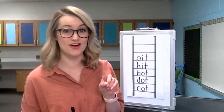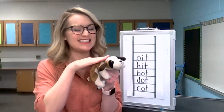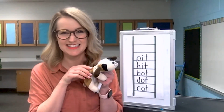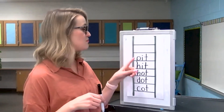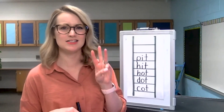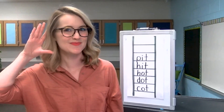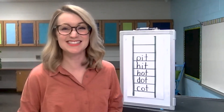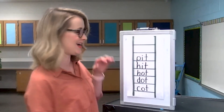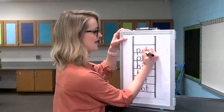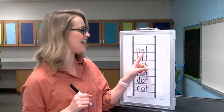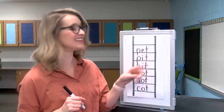Now we're going to change one letter in the word pit to make the word pet. Isn't my pet dog so cute? He loves to get pets. Pet. What letter do you think we're going to change to turn pit into pet? Let's listen for the sounds: P-E-T. What letter do we change? Yes, the middle sound. We're going to take out the I and put in an E for pet. Let's write it down: P-E-T. Take your finger and let's check it: P-E-T. Pet. Great work.